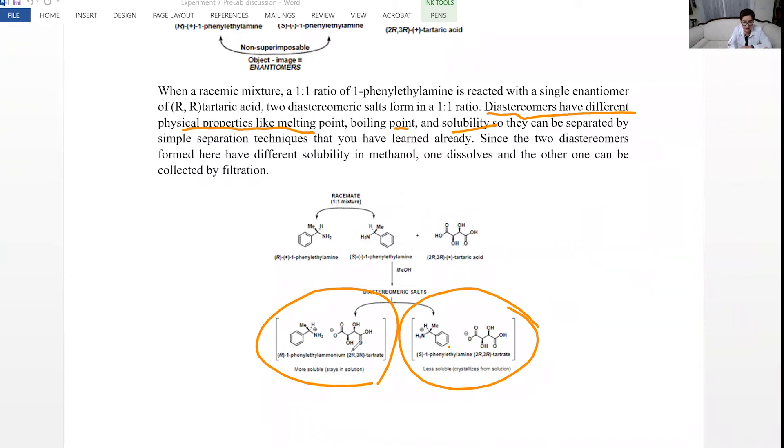And one of these compounds, the S product or S complex, or S diastereomer, is not soluble in methanol, and it gives us prismatic shape of crystals, or it gives needle-like crystals.